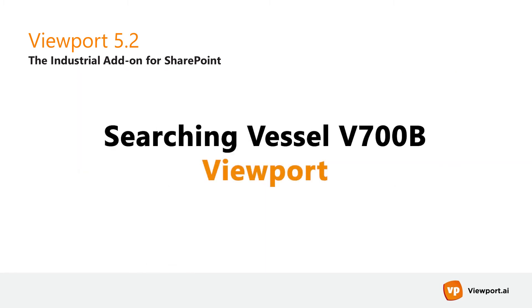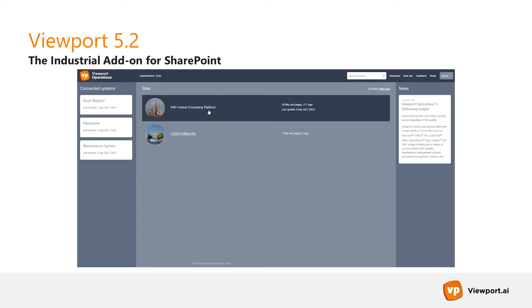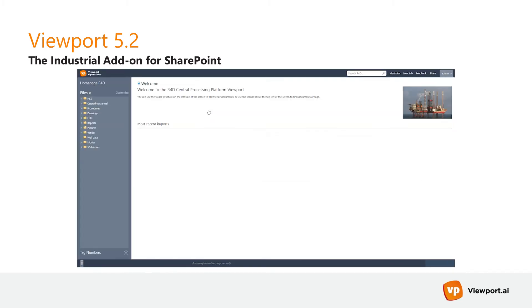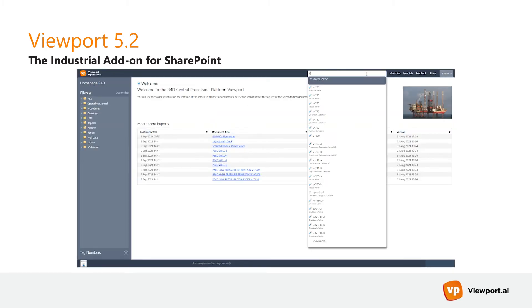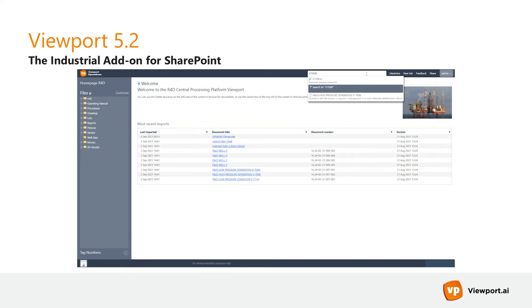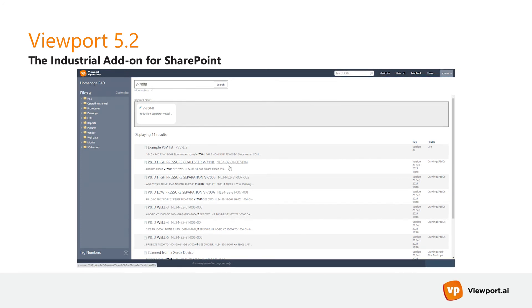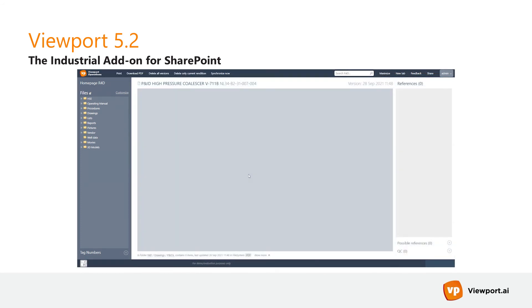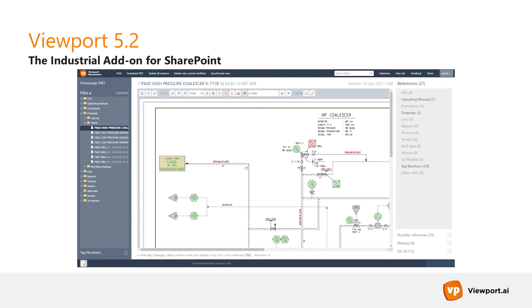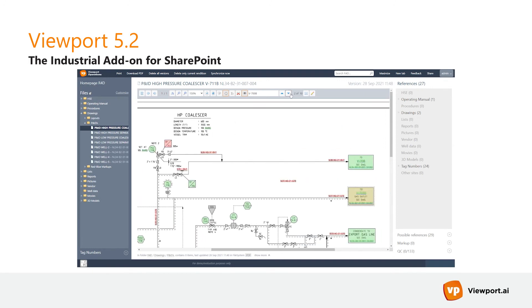Our Viewport solution was created specifically for technical information. This makes searching for a tag like V-700B much easier. Let's see how Viewport handles such a search. Whichever way you spell your tag number or document number, you will always get the same results, and you can be assured that Viewport will highlight the number as soon as you open that file.